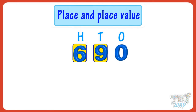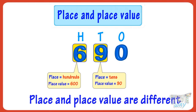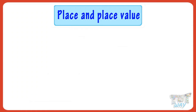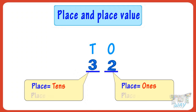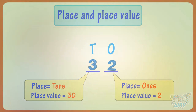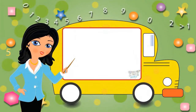So kids, if a digit comes more than once in a number, everywhere its place and place value will be different. So kids, what have we learned today? We have learned that place is the position of the digit in a number, and place value is how much the digit is worth. Now go ahead and take a quiz to learn more!